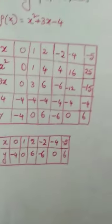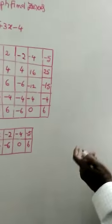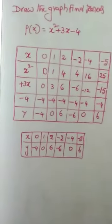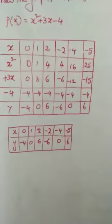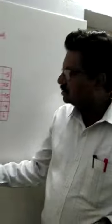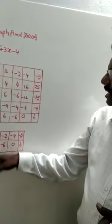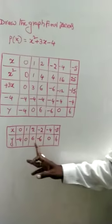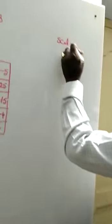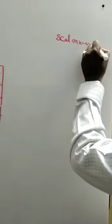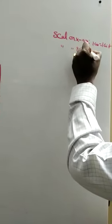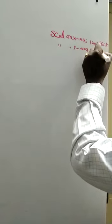Now we draw the graph. When drawing the graph you must write the scale on the x-axis and scale on the y-axis. To decide the scale, observe the highest values — the highest y value is 6, and x values go up to about 5. Scale on x-axis: 1 cm equals 1 unit. Scale on y-axis: 1 cm equals 1 unit.